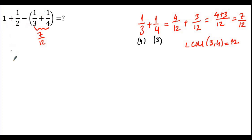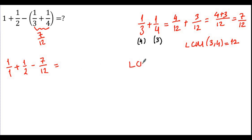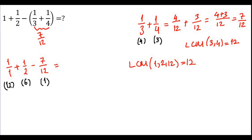We are done with the bracket. Continuing the question: instead of 1 I can write 1 over 1, plus 1 over 2, minus 7 over 12. The denominators are 1, 2, and 12, so I have to find the LCM, which is 12. 1 times 12 is 12, 2 times 6 is 12, and 12 times 1 is 12. So I multiply the numerator and denominator accordingly: 6 times 1 is 6, 6 times 2 is 12.